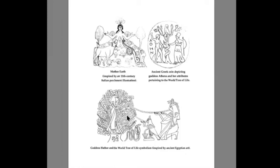Here we can see some examples of deities and trees — here is goddess Hathor in a tree, from ancient Egyptian artwork. And here we can see goddess Athena with her tree. This is a picture of mother earth from an old Italian illustration from the 11th century. So this is a really rich and old tradition of deities or beings being connected to trees.